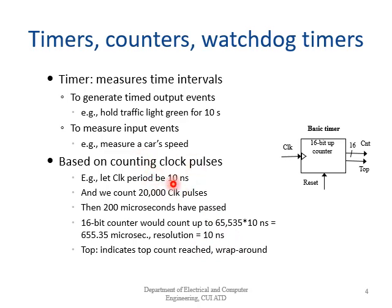The resolution is your clock period — here, 10 nanoseconds — meaning the smallest measurable time change is 10 nanoseconds. The 'top' signal indicates that the maximum count has been reached, and wrap-around means the timer resets or generates an overflow signal. To recap, we use a timer to measure input events or to generate timed output events, as shown in the button-press example.